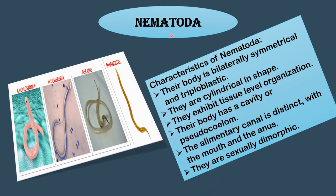The next phylum is Nematoda. Their body is bilaterally symmetrical and triploblastic, with three layers. They are cylindrical in shape. Examples include Ascaris, Rhabditis and Pteria — different types of nematodes. They exhibit tissue-level organization. Their body has a cavity or pseudocoelom, meaning it is not an actual coelom but acts like one. The alimentary canal is distinct with the mouth and the anus. They are sexually dimorphic.